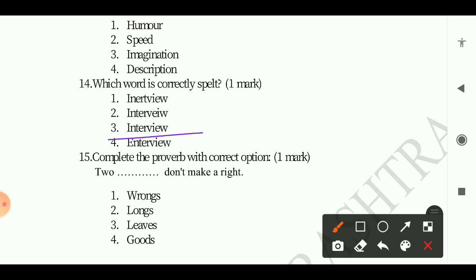Question 15: Complete the proverb with correct option. Two dot dot don't make a right. The answer is Wrongs.